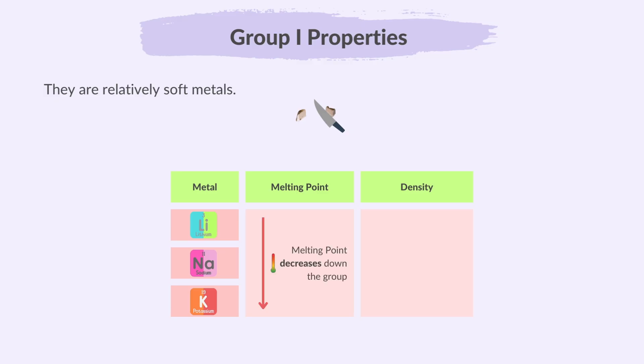Melting points decrease as you move down the group, so the lower the temperature it takes to change the element from a solid to a liquid. Density is how heavy something is for its size, and density increases as you move down the group.